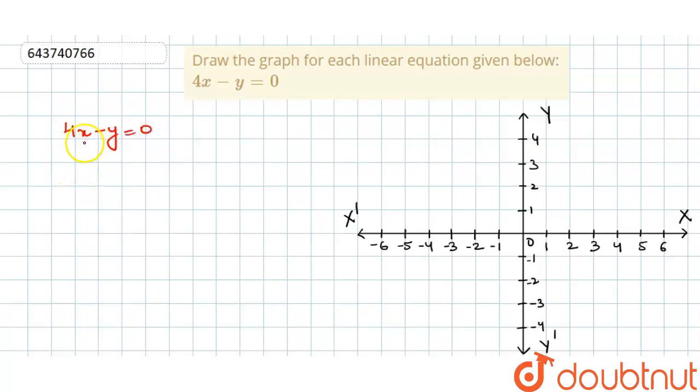Now what we need to do is we have to find different values of x and y. Basically we have to find the coordinates for that. What we will do is we will put different values of x and y and find the respective coordinates.